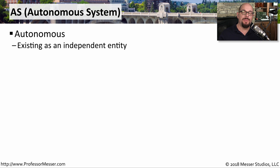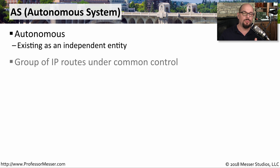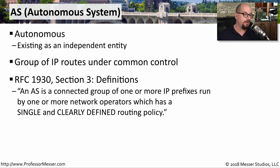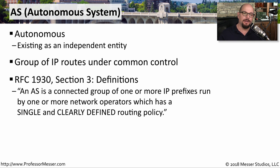Autonomous means that something is existing as an independent entity. In this case, we're thinking about an independent network — it might be a group of IP addresses or IP networks that are under common control. If we look at RFC 1930, Section 3, it defines an autonomous system as a connected group of one or more IP prefixes run by one or more network operators, which has a single and clearly defined routing policy.